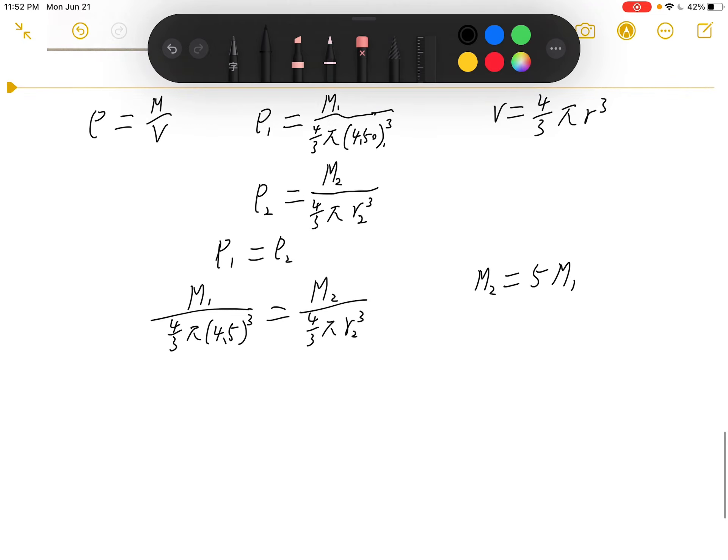So we're going to substitute this into our equation. We will get M1 divided by 4/3 pi times 4.5 cubed equals 5 M1 divided by 4/3 pi r2 cubed.